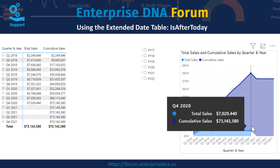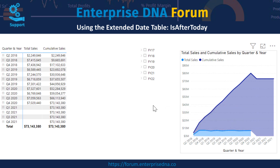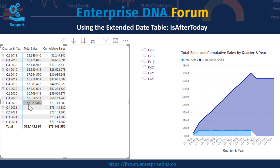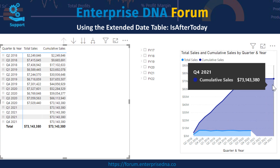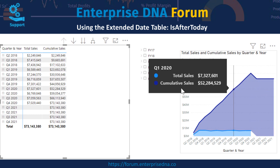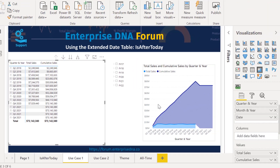It starts to go down because we don't have total sales in that period, and then it just repeats itself over and over out through the end of 2021. So we want to clean this up. The question is, how do we go about doing that?